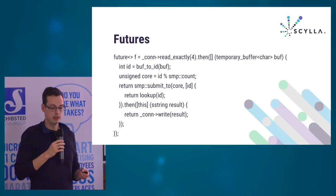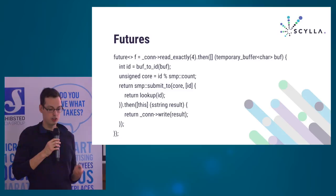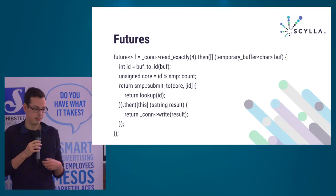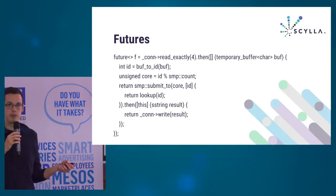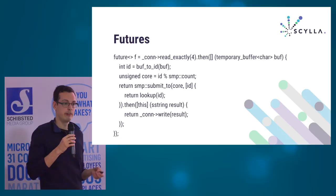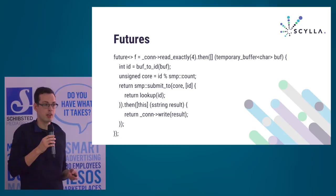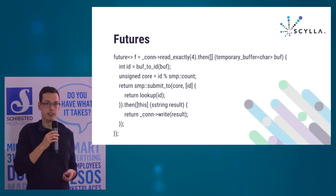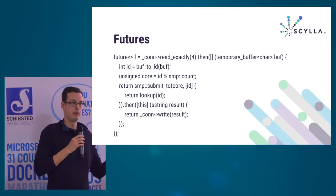This is much more lightweight than the equivalent in Java and Scala. There we don't really have any control over which thread picks up what future, so you still have thread-safe data structures, cache pollution, and lack of cache locality. There's a lot of overhead in the JVM task scheduler because it needs to be thread-safe — something we don't need. Also, here we can take advantage of stack allocations and don't have to allocate all of these futures on the heap.